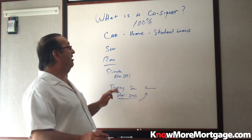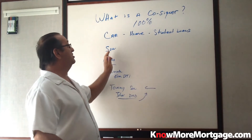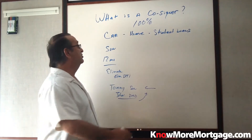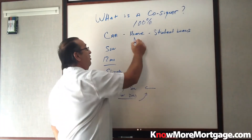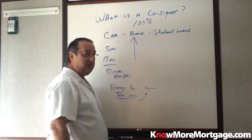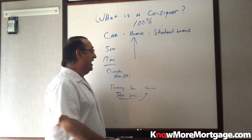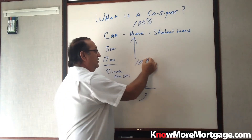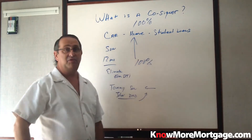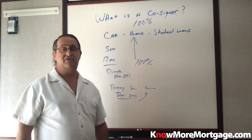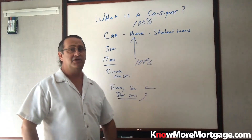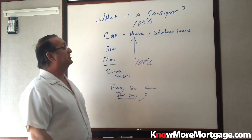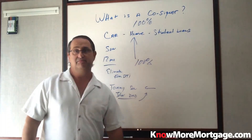But count on it: when you co-sign for someone and you're trying to purchase a home, that debt is 100% yours. That's going to be 100% your debt. You're not getting away with it — it counts toward your debt-to-income ratio. Thank you.